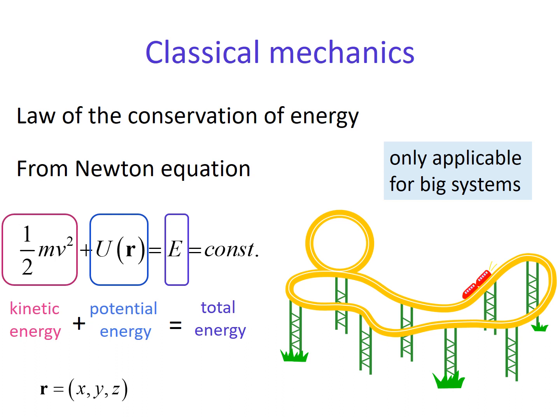I hope you have already learned this formula in high school, the law of conservation of energy. This is coming from the Newton equation, which is also called classical mechanics. Kinetic energy is represented as 1 over 2 times mv squared. Potential energy depends on the field created at the position r, denoted as xyz coordinate. The sum of these two terms is constant, and we call it total energy.